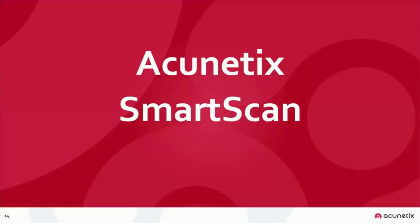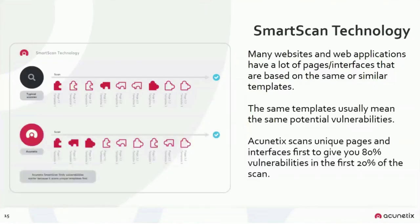The Acunetix smart scan technology dynamically prioritizes scanning tasks to deliver meaningful results as quickly as possible. A special crawler algorithm lets Acunetix recognize pages similar to those already scanned and pushes them to the back of the queue. This way, the first pages scanned are all unique, and depending on the site, you can get up to 80% of vulnerabilities discovered in the first 20% of the scan.